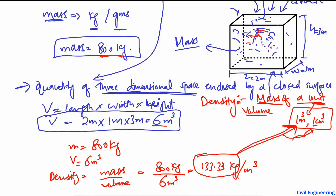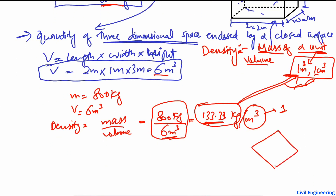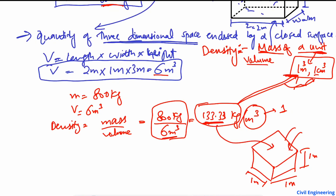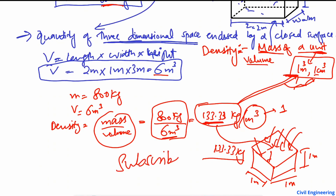Density is the mass of an object per unit volume — in one cubic meter, not five or six. We divided the total mass by total volume, giving a density of 133.33 kilograms per cubic meter. If this were a 1m × 1m × 1m object, only 133.33 kilograms of concrete would fit inside. That is the density of this concrete material. Density is mass per unit volume. Don't forget to subscribe to our channel. Thank you for watching.